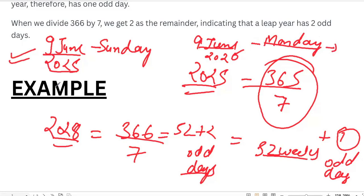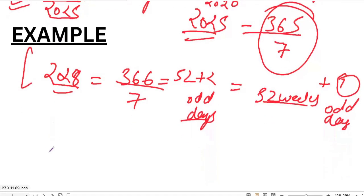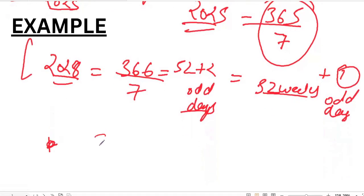So that is why this odd day concept is very important. And when odd days will become 7, then calendar will become identical because 7 days is equal to 1 week. Now let's take the example. This is again the question of CSET 2024.